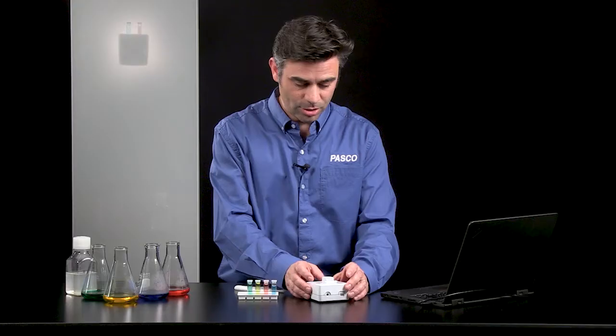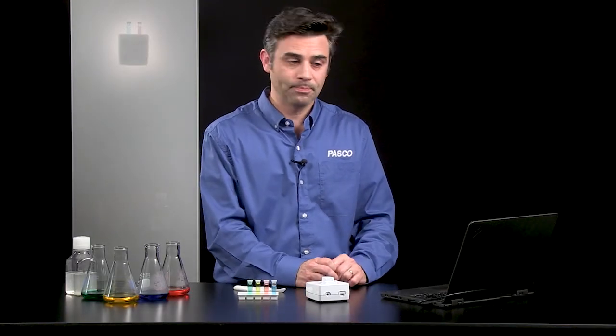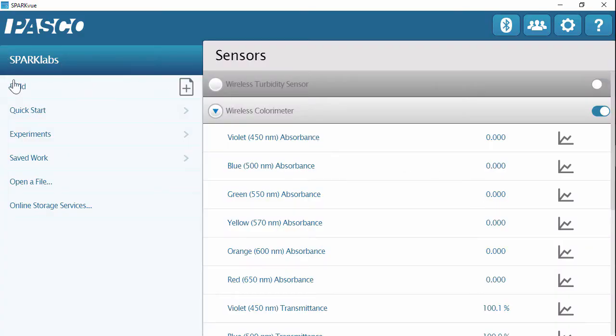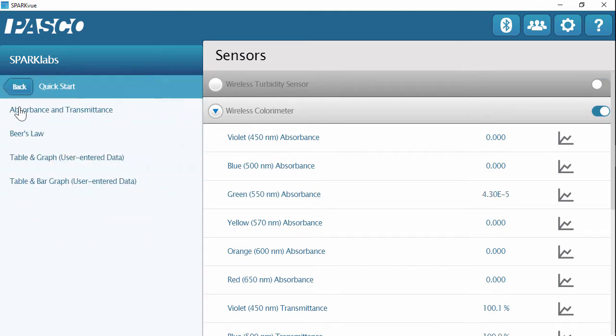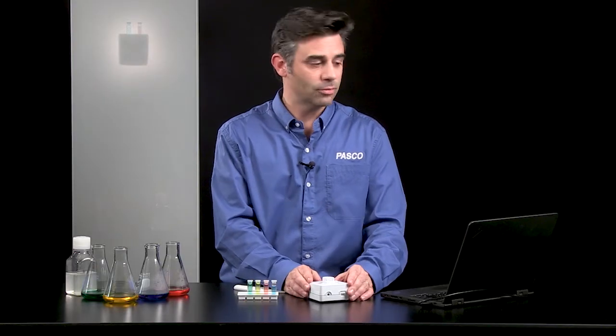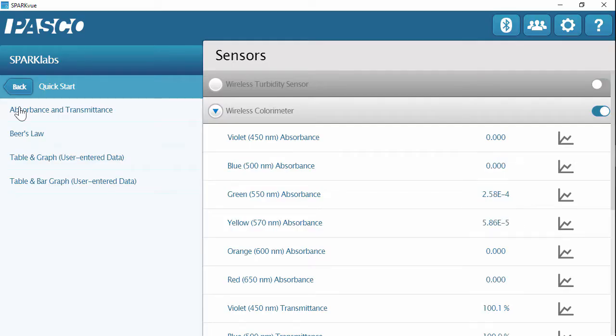Now I did want to introduce this with a quick start lab. So over here under SparkLabs, there are quick start labs that are sensor specific. So if I click on this quick start tab, then I get a couple of quick start labs that are only for this wireless colorimeter. And the first one is a great introduction, that is absorbance and transmittance.